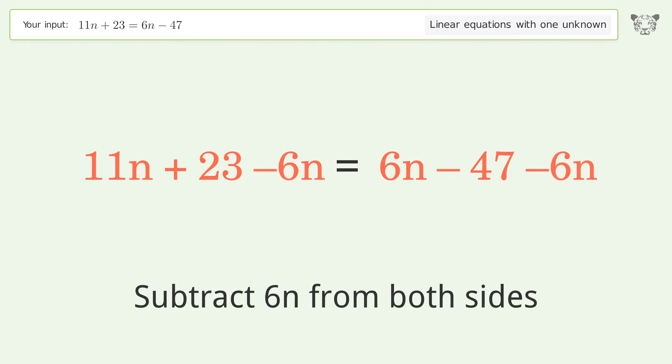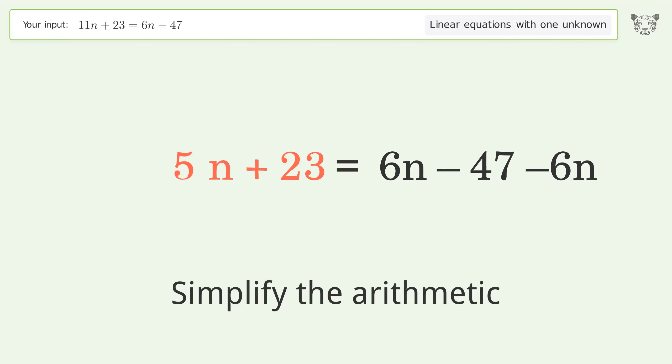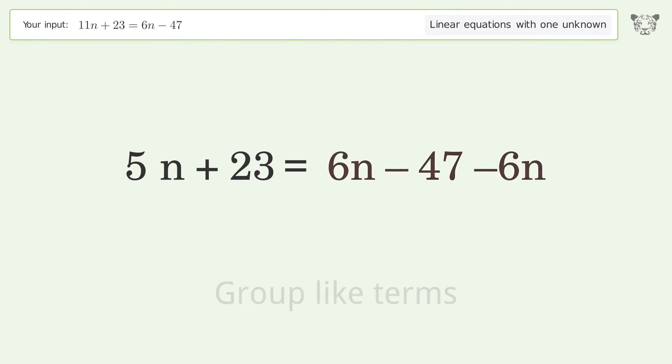Group all n terms on the left side of the equation. Subtract 6n from both sides. Group like terms. Simplify the arithmetic.